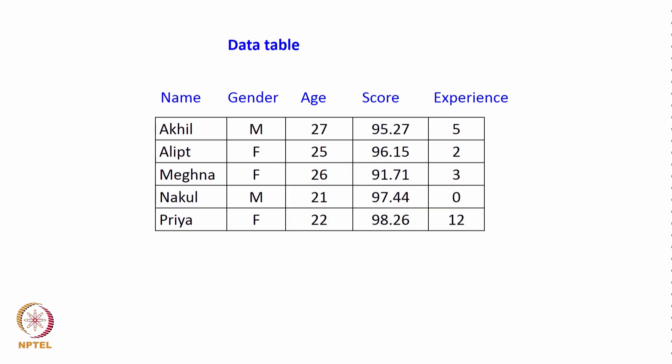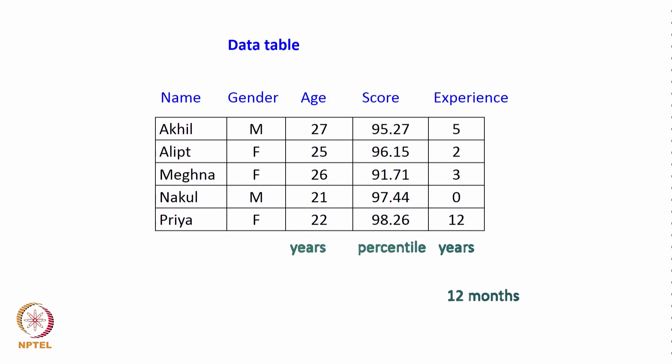Broadly, the data are now put in a data table with each column having a heading such as name, gender, age, score, and experience. We also need units for some of them — age would be in years and experience could be in years, while the others may not have an explicit unit. Score could be measured as percentile, and the value 12 months is an outlier. Data could have outliers, and we need to collect and compile data carefully.